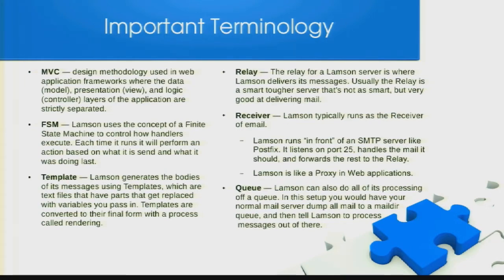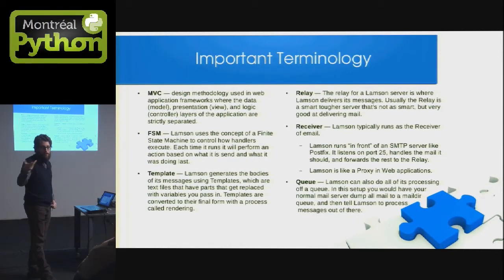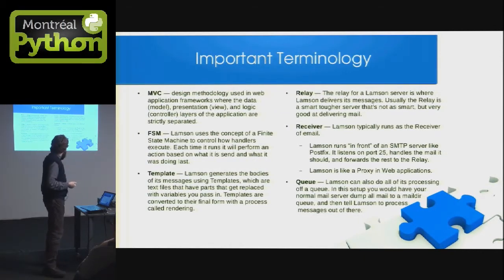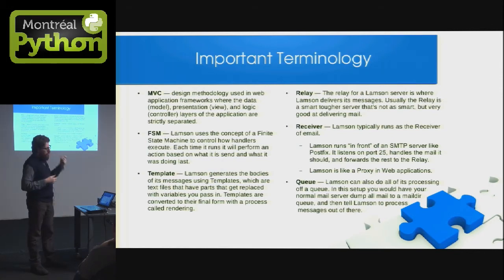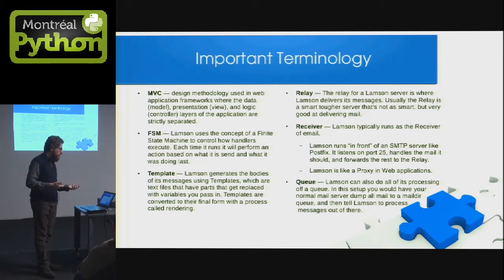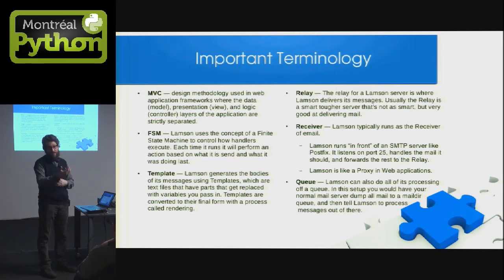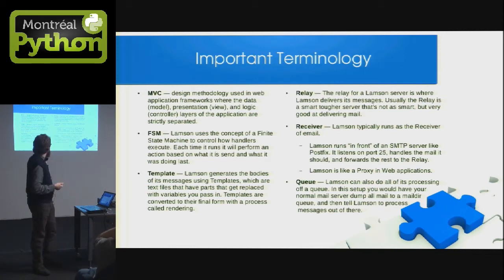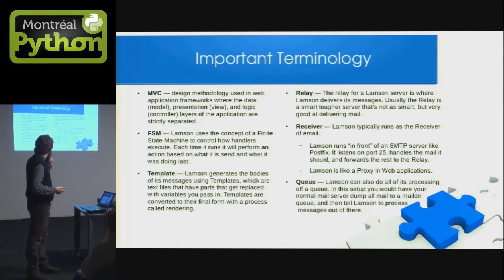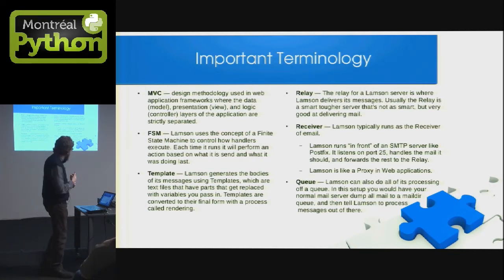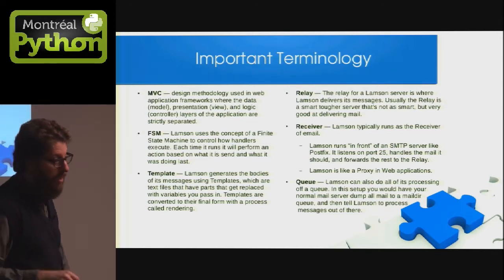C'est l'exemple que j'ai présenté au début — au fond de toutes les méthodes, c'est d'envoyer les courriels avec le relais. Conceptuellement, Lamson c'est un récepteur de courriels avec l'idée d'un système web — c'est un proxy. Il est au front du serveur normal, il écoute au port 25 et depuis envoie les courriels avec le relais. Et aussi, il utilise les mails du répertoire, le format maildir, pour partager des messages — c'est un fichier séparé dans un répertoire spécial.